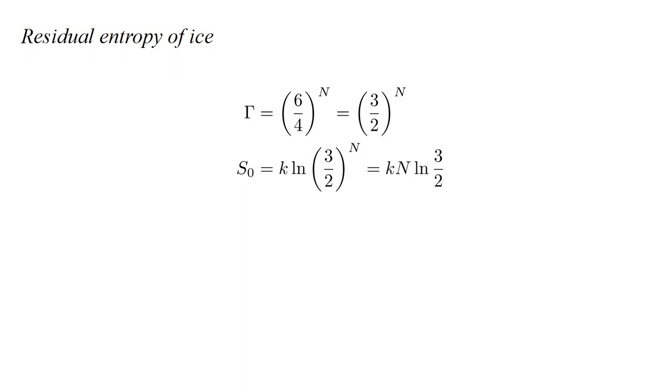So, the number of ways to arrange n molecules of water in an ice crystal should be gamma equals six-fourths to the n, which is three-halves to the n, and S zero should equal k log three-halves to the n, which can be written k n log three-halves. If n is Avogadro's number, then k n is the gas constant r.